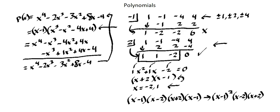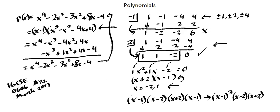We could simplify by writing x minus 1 squared times x minus 2 times x plus 2, since there are two x minus 1 factors. Either format is acceptable as a complete solution to fully factorizing x to the power of 4 minus 2x cubed minus 3x squared plus 8x minus 4. This problem comes from IGCSE paper 0606 number 22 from March 2017. This concludes our lesson on polynomials — practice these concepts with exercises from your textbook, and I look forward to seeing you in the next lesson.